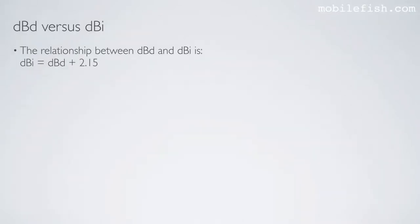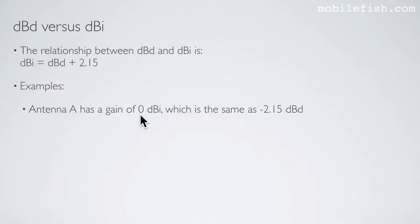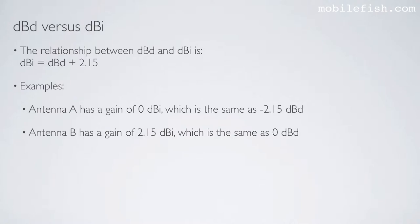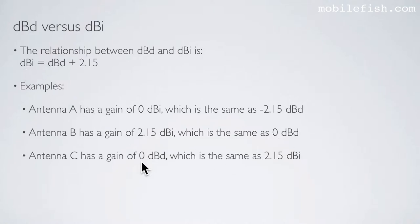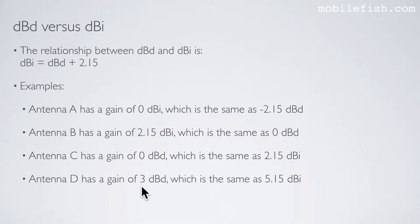The relationship between dBd and dBi is expressed by this equation. Here are some examples. Antenna A has a gain of 0 dBi — enter 0 and you will get minus 2.15 dBd. Antenna B has a gain of 2.15 dBi — enter this value and you will get 0 dBd. Antenna C has a gain of 0 dBd — enter 0 and you will get 2.15 dBi. And antenna D has a gain of 3 dBd — enter 3 and you will get 5.15 dBi.